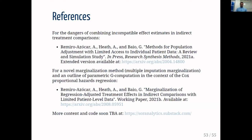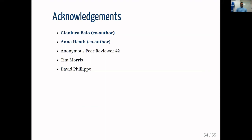Finally, some references. First, for the dangers of combining incompatible effect estimates in indirect treatment comparisons, there is a paper showing how the conventional version of STC produces bias due to an incompatible comparison. These parametric g-computation methods are outlined in a second paper, along with a new method we developed called multiple imputation optimization, useful when the outcome model is not a generalized linear model. We also outline parametric g-computation in the context of Cox regression and survival outcomes — very common in oncology appraisals — with more code and content coming soon. Acknowledgments to my co-authors, to peer reviewer number two, and to Tim Morris and David Filippo who were instrumental in motivating this work.